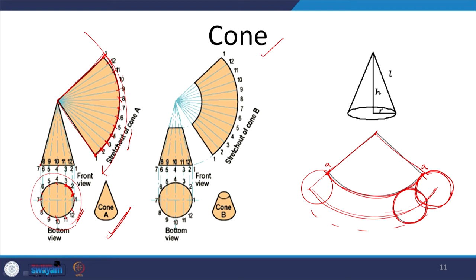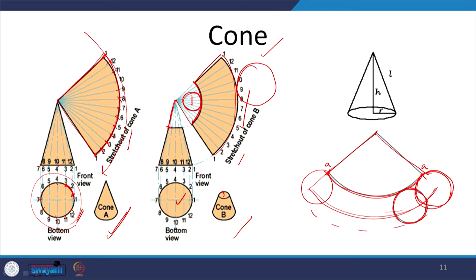What if it is a frustum — a cut cone? In that case we follow the same process and the only thing we remove is the part corresponding to the removed slant length. If we have to make a frustum from this: this is where we draw the base circle, and somewhere along the arc we make the top circle. So the top circle will be here and the bottom circle will come here — that is how we develop the surface for the frustum of a cone.